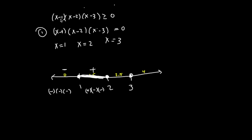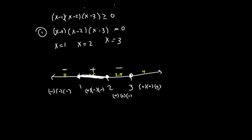Plugging in 2.5: (2.5−1) is positive, (2.5−2) is positive, but (2.5−3) is negative. So this interval gives a negative outcome — not part of my solution set. Now plug in 4: (4−1), (4−2), and (4−3) are all positive, giving a positive outcome. That means the interval to the right of 3 is part of my solution set.